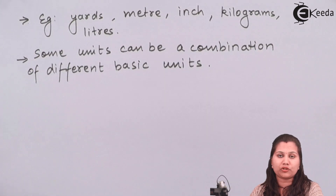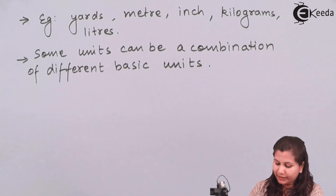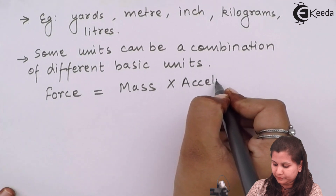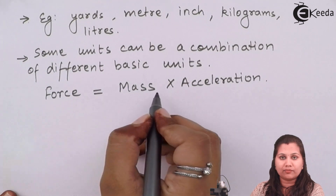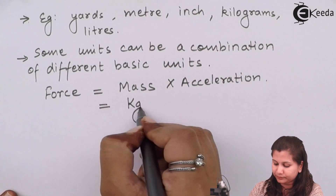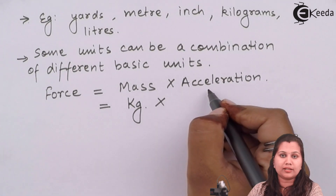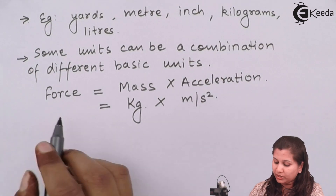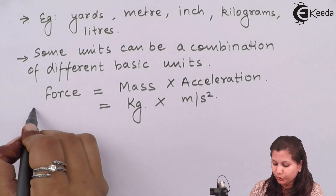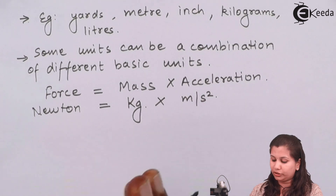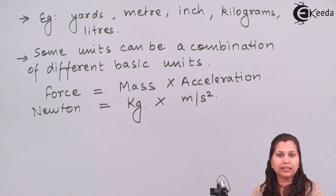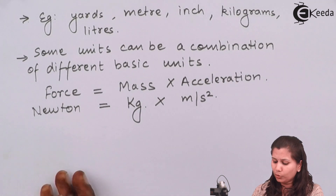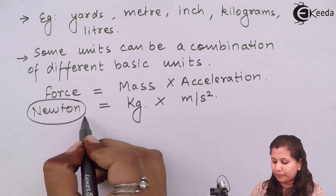There are some units of measurement which are a combination of different basic units. For example, force — we know that force is equal to mass into acceleration (F = ma). Mass is measured in kilograms and acceleration is velocity per time, that is meters per second squared. So the unit of force, which is Newton, is expressed as the combination of two basic units: kilograms and meters per second squared. So there are some units which are expressed as the combination of basic units.